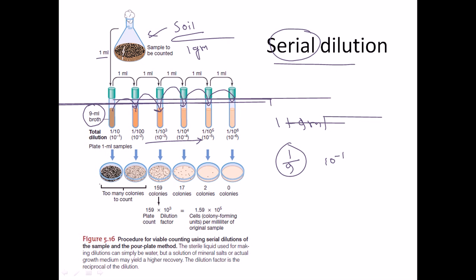As we plate from each container, the first two — 10⁻¹ and 10⁻² — give too many colonies. Usually people rely on concentrations from 10⁻³ to 10⁻⁵, because these give a desirable number of colonies. For example, 10⁻³ gives 159 colonies, 10⁻⁴ gives 17, and 10⁻⁵ gives 22. These colonies are well-isolated, making it easy to take them and create a pure culture.